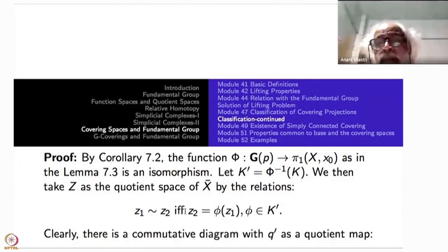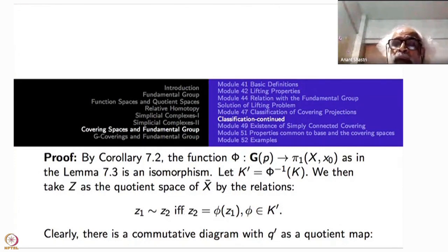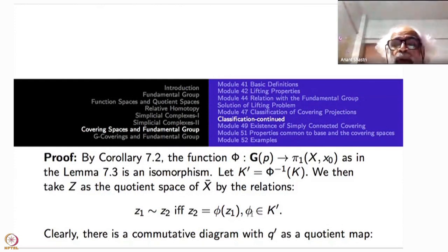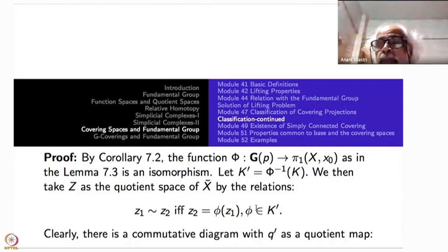Put k′ equal to φ⁻¹(k) under this isomorphism; that gives a subgroup of the group of covering transformations. The group of covering transformations is identified with the fundamental group, so any subgroup k of the fundamental group can be thought of as a subgroup of GP under this isomorphism. We then take z to be the quotient space of x̄ by the relation: z₁ ~ z₂ if and only if z₂ = φ(z₁) for some φ inside k′ — that is, the orbits of the action of k′ on x̄.